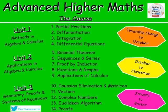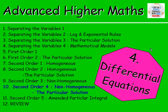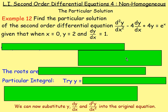Chapter 4, lesson 10. We're still on second order differential equations, looking at non-homogeneous differential equations, moving on to the particular solution. The first 11 examples are in the previous videos; we're moving on to example 12. Find the particular solution of the second order differential equation d²y/dx² − 4 dy/dx + 4y = e^x, given that when x=0, y=2 and dy/dx=1.